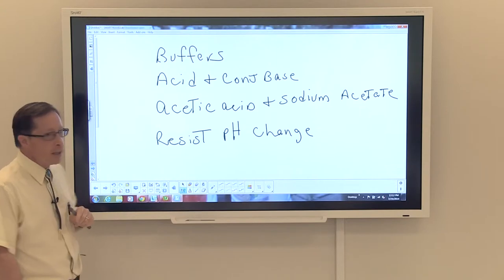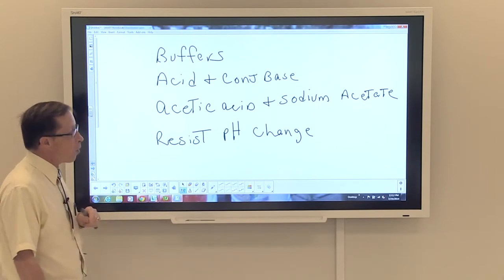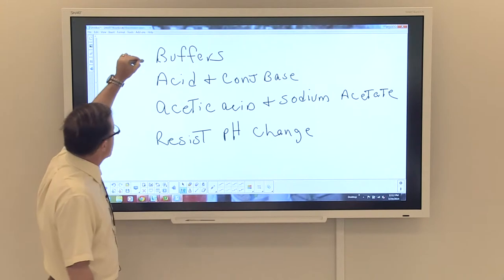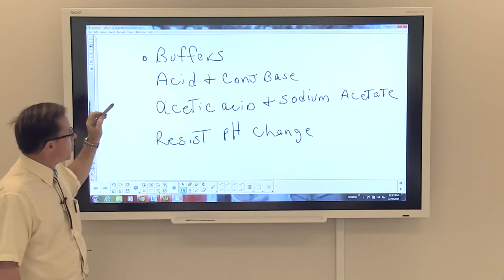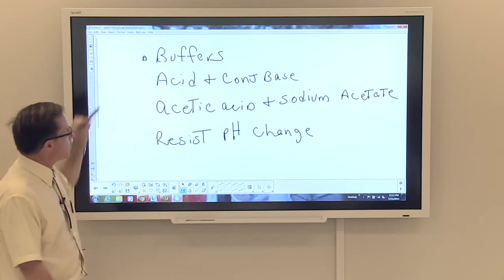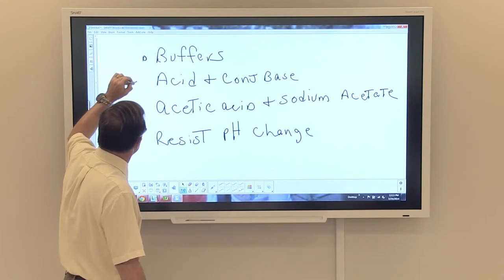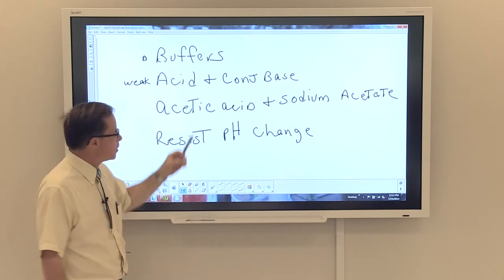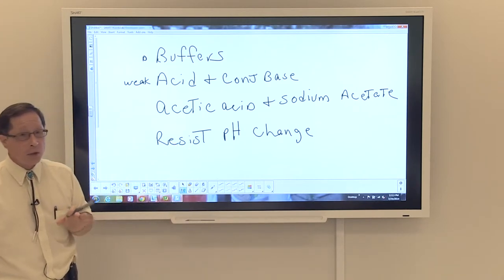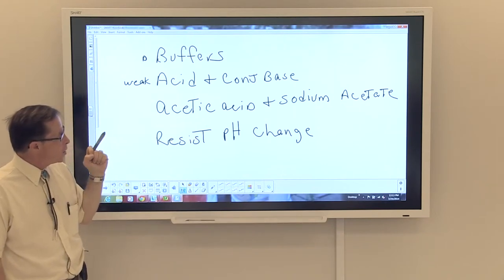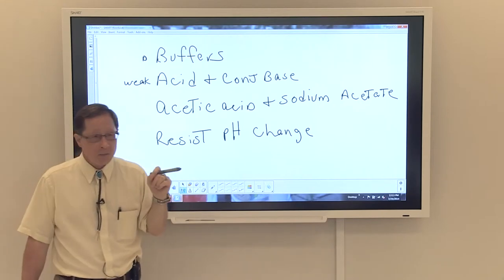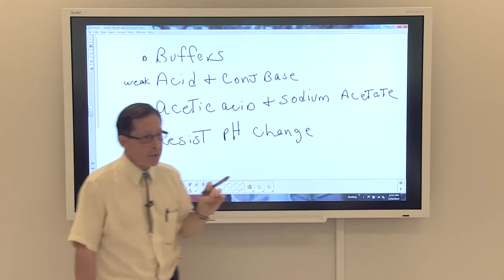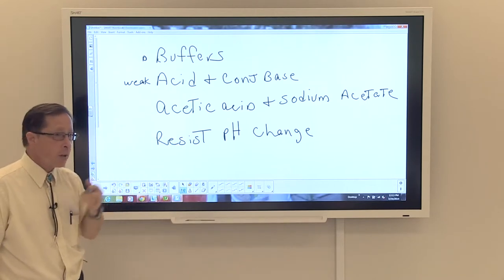Now, there are times when we need to have solutions that are resistant to changes in pH. And what I want to talk about just briefly is the action of a buffer. A buffer essentially is a weak acid and its conjugate base. Acetic acid is one of the really good examples of a weak acid. Acetic acid is found in products like vinegar. But if you neutralize part of the acetic acid and you form sodium acetate, and you have a mixture of sodium acetate and acetic acid, let's talk about what we have in the mixture.